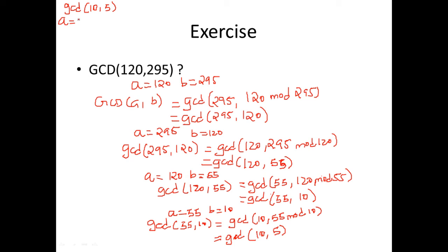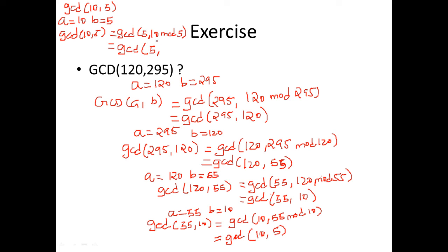Now a is 10 and b is 5. GCD of a, b is nothing but GCD of 5, 10 mod 5. The remainder is 0. We know GCD of a, 0 is equal to a, so we say 5 and terminate the process since we have reached 0. The greatest common divisor for 120 and 295 is 5.